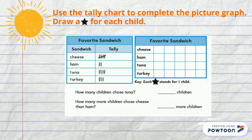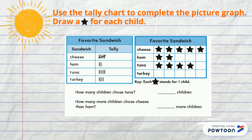Five students voted for the cheese, so we're going to draw five stars next to cheese. Two students voted for the ham, so we will put two stars. For the tuna, four students voted for it, so draw four stars. For the turkey, three voted for it, so we will draw three stars.